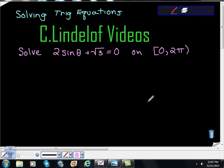C. Lindelof videos, Solving Trigonometric Equations. Here we have solve 2 sine theta plus square root 3 is equal to 0 on the interval. Please be careful, this is an interval. On the interval 0 to 2 pi.